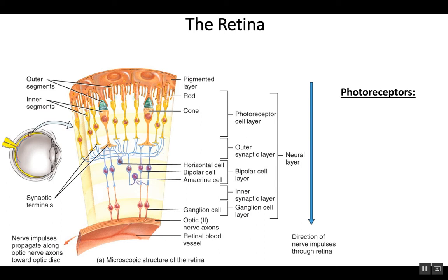Let's take a close look at the retina. The retina, if we refer back to this drawing, is the inner layer. It's primarily in the posterior parts of the eyeball, and it captures light rays.